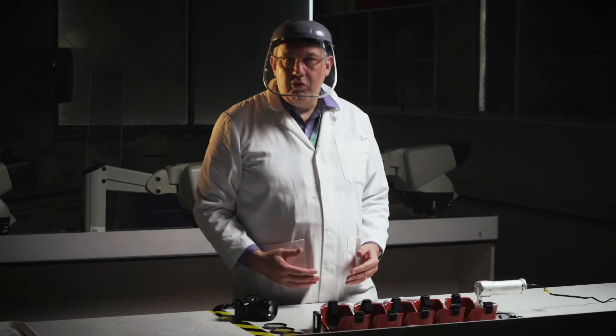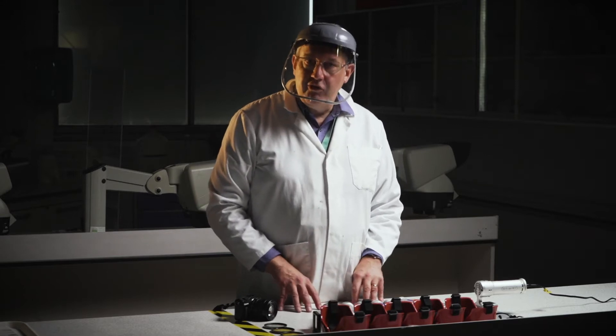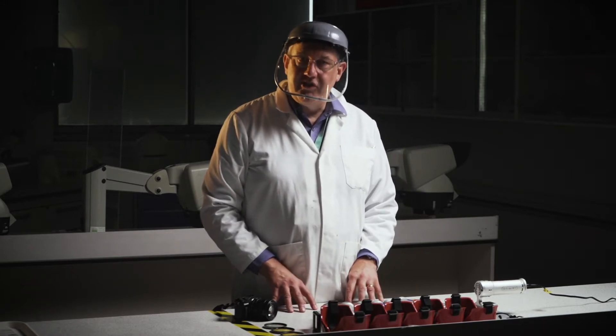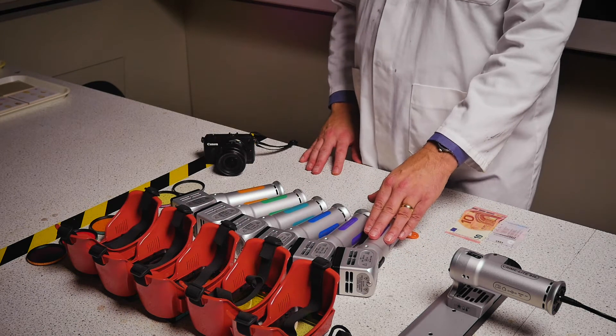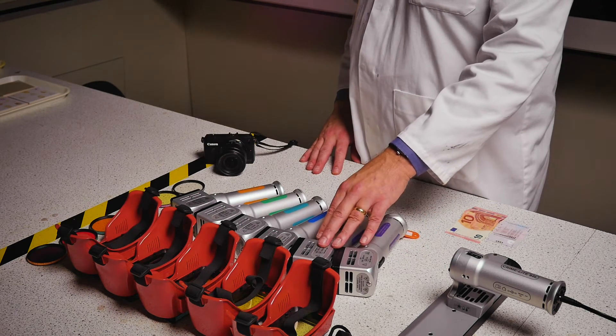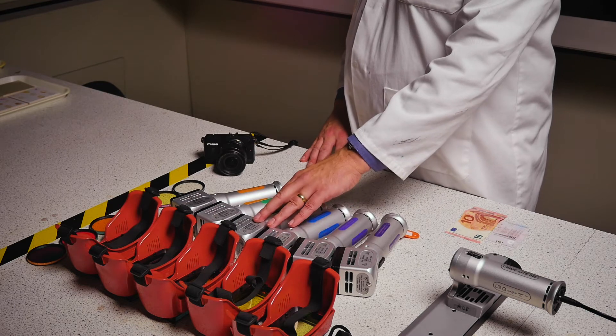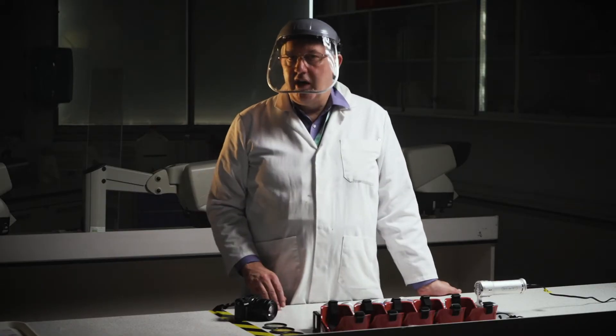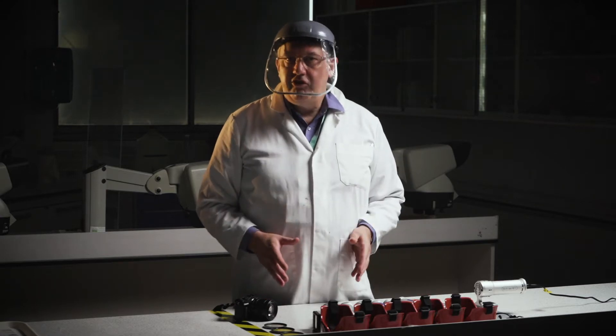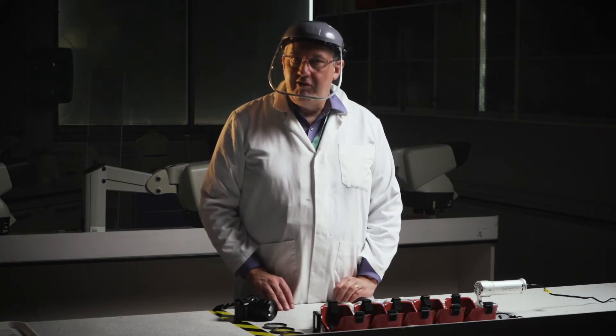But the main focus of this talk is really the colored light sources that we use for different types of fluorescence examination. And we have a range here. We have a range that goes from ultraviolet to violet, blue, blue-green, green and amber. And all of these different colors of light, these different wavelength ranges, will find different forms of forensic evidence.